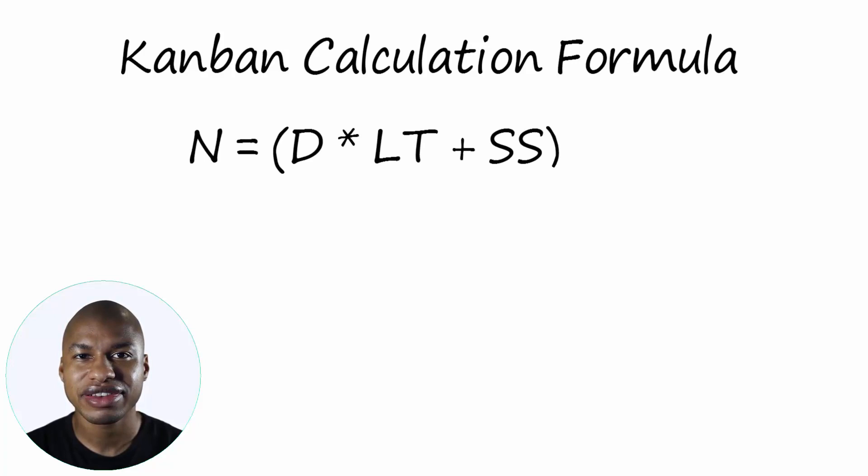To have a reference number to start with, there is a formula: N equals D times LT plus SS divided by Q. Where N is the number of Kanban.